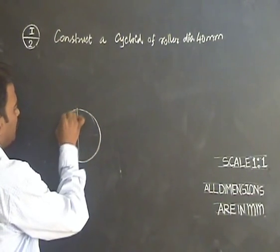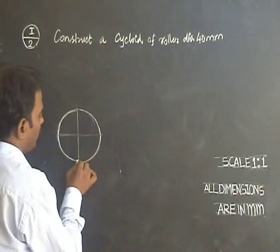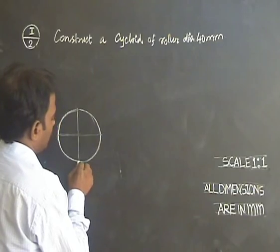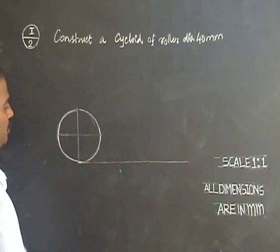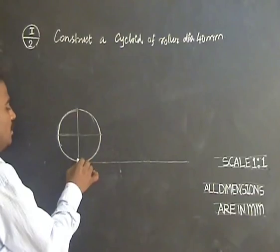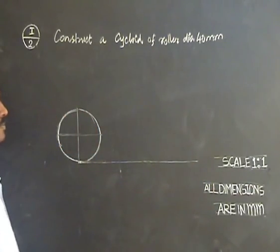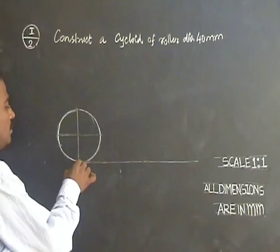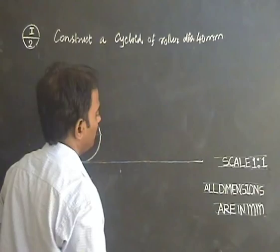The concept of cycloid is the roller is moving on a plane surface. Path of a point on the circumference of a moving roller on a straight line gives a cycloid. The locus of path of the moving point on a roller moving on a plane surface without slipping can give cycloid.